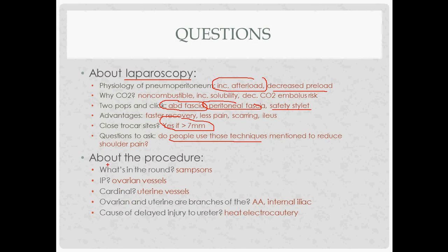Procedure-related questions include: what structures are in each ligament — round ligament, IP, cardinal, uterine? The ovarian artery comes off the abdominal aorta; the uterine artery comes off the anterior branch of the internal iliac. The cause of delayed ureteral injury is heat from electrocautery — heat travels to the ureter, causing inflammation and scarring noticed a few days post-procedure. You could also discuss with your attending how they decide between vaginal and laparoscopic approaches based on factors like uterine size, nulliparity, or endometriosis, and whether the increased rate of urologic injury with laparoscopy reflects a learning curve or a steady-state phenomenon.